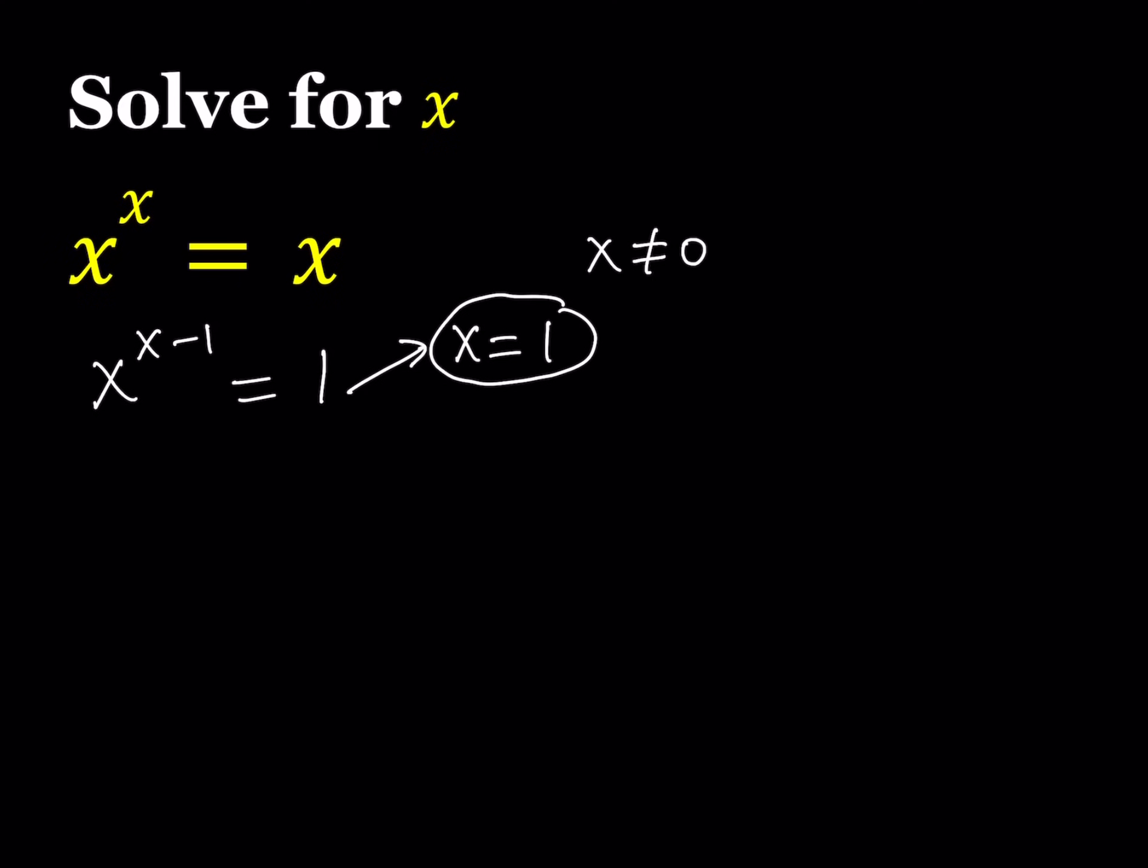Or we can have something like x equals negative 1, but at the same time, we have to have that negative 1 needs to be raised to an even power, so x minus 1 needs to be even. But notice that if x is negative 1, then negative 1 minus negative 1 is equal to negative 2, which is an even number, so x equals negative 1 works as well. So we got two solutions already.